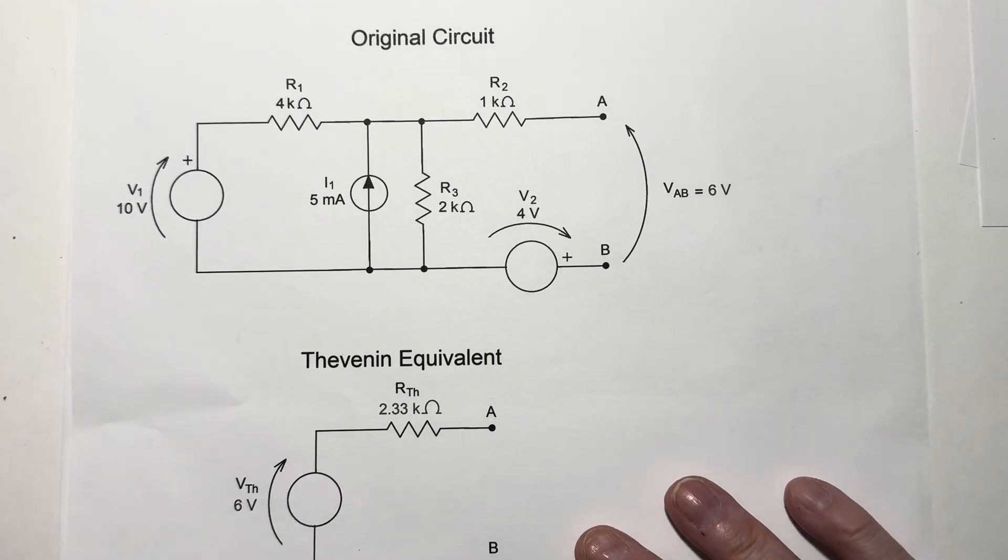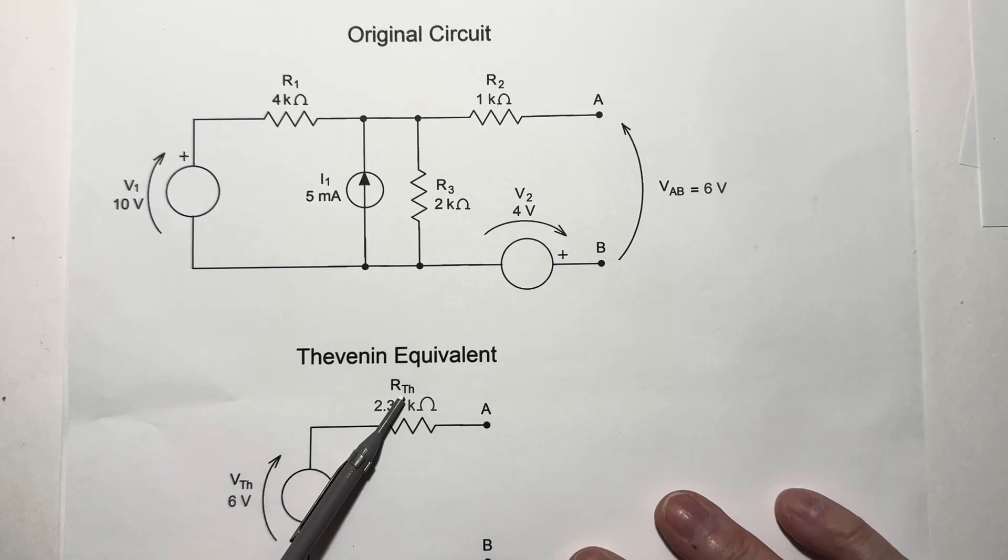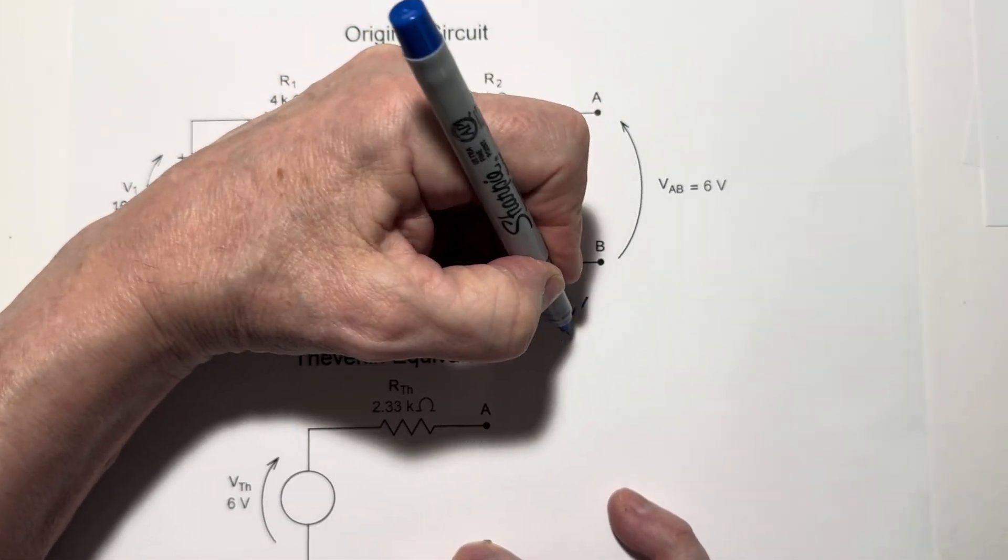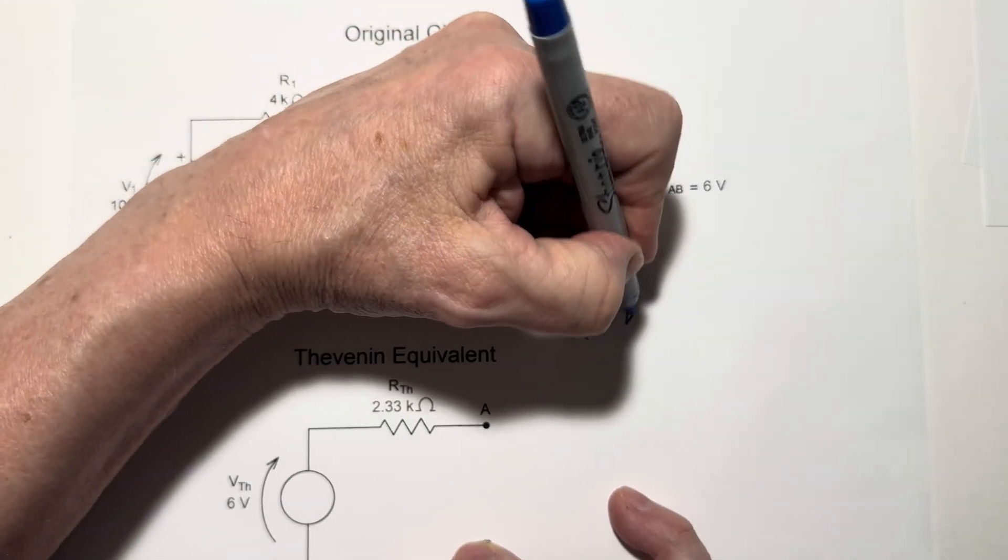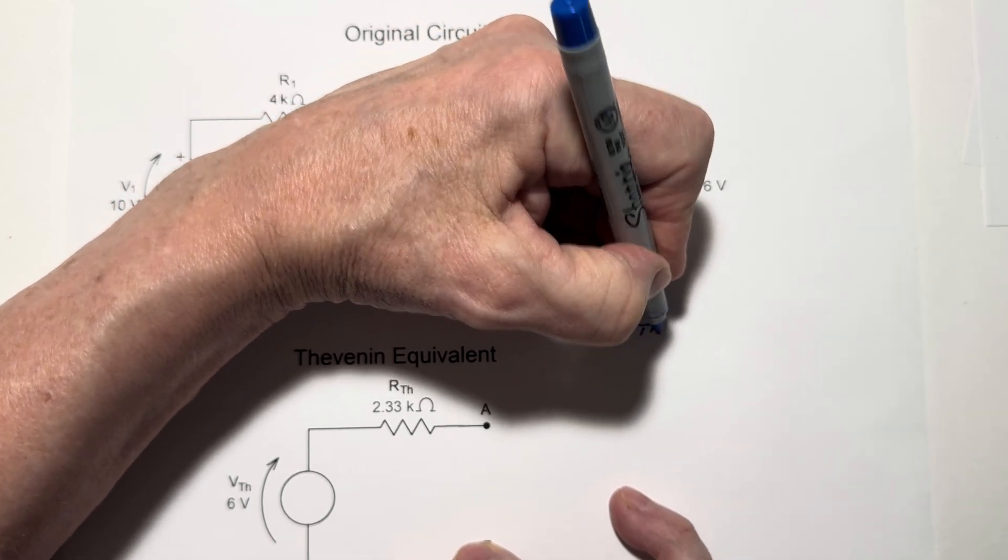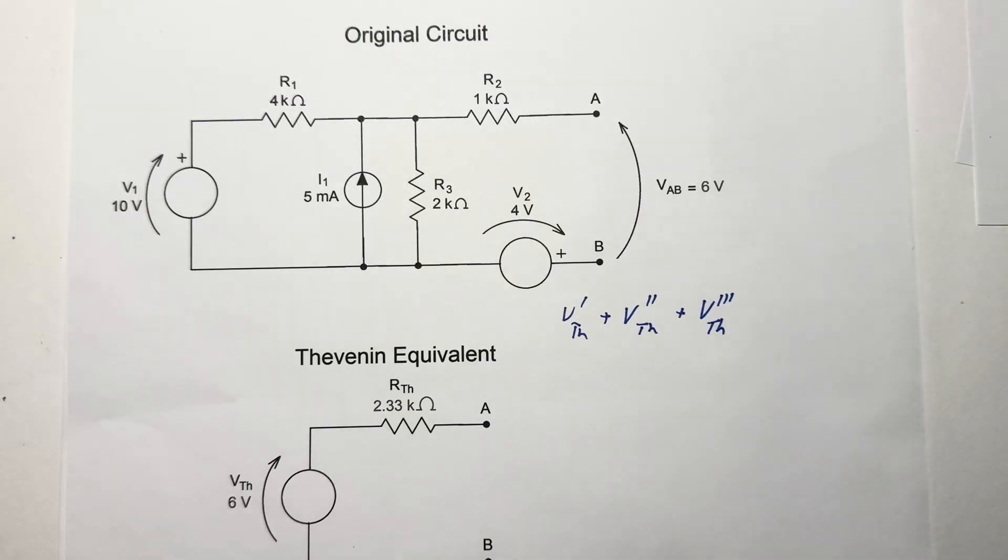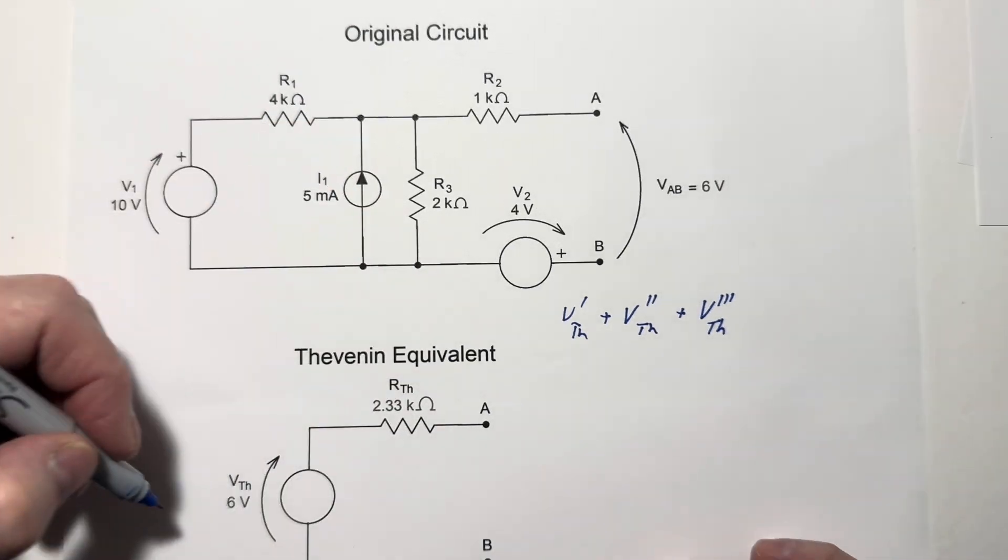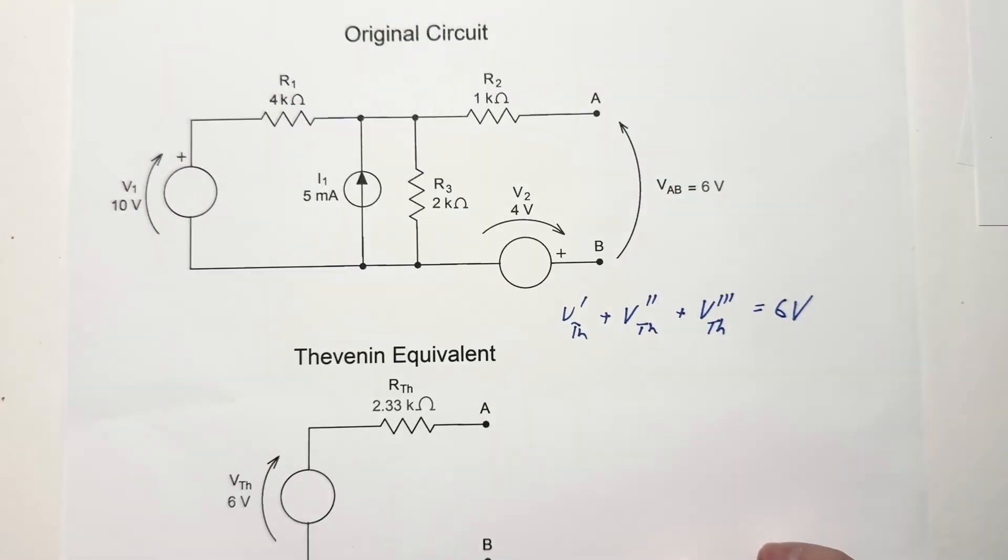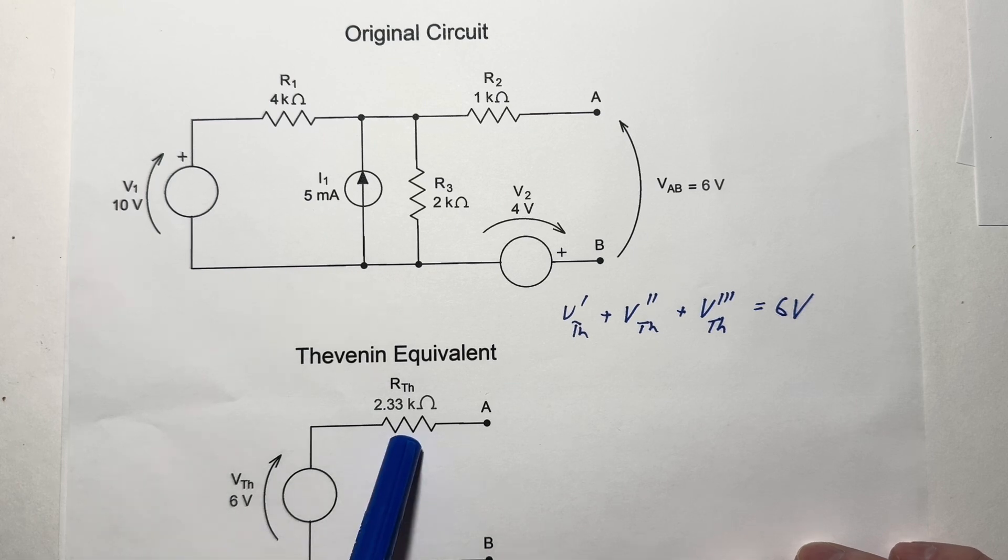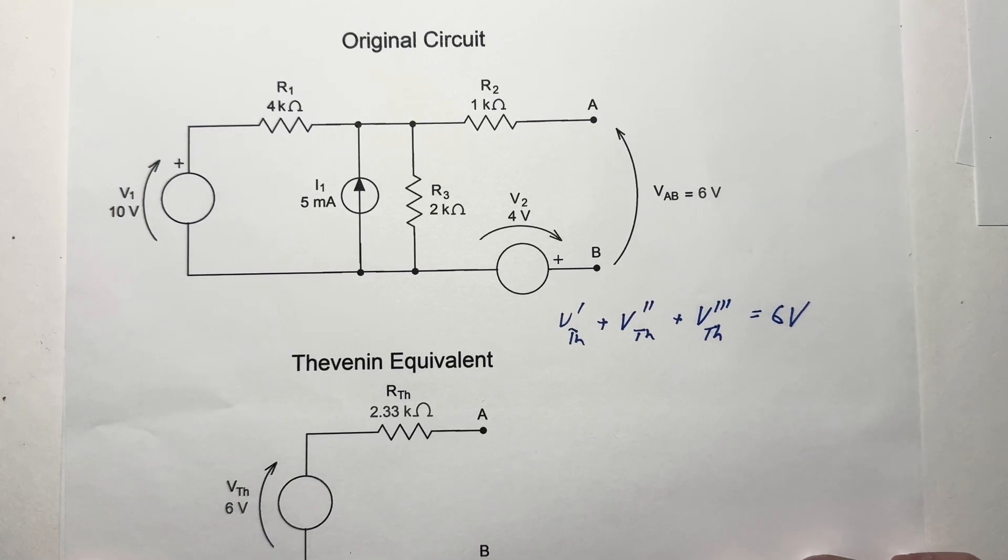Finally, to get our Thevenin equivalent, we've put the Thevenin resistance in that we calculated earlier, and the net Thevenin voltage is V prime TH plus V prime prime TH plus the triple prime V sub TH, and those values all add up to 6 volts. So there is our Thevenin equivalent looking into terminals A and B. We've got a Thevenin voltage of 6 volts and an equivalent resistance of 2.33K ohms.